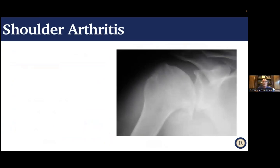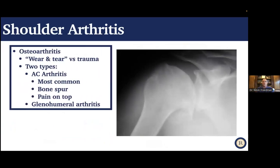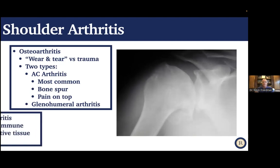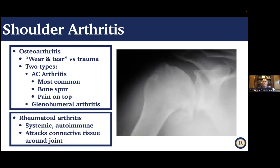Finally, shoulder arthritis. There's osteoarthritis or wear and tear, sometimes post-traumatic after prior injury or surgery. There are really two major types: AC joint arthritis — the joint on top of the shoulder, very common, with bone spurs or prominence causing pain directly on top — and glenohumeral arthritis — the ball and socket joint itself. There's also rheumatoid arthritis, an inflammatory type affecting multiple joints, attacking the connective tissue around the joint. X-rays look different in rheumatoid versus osteoarthritis.